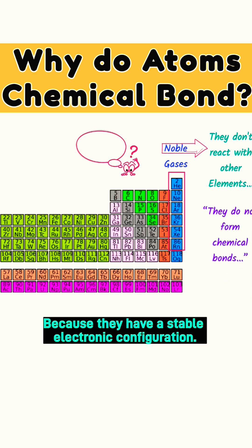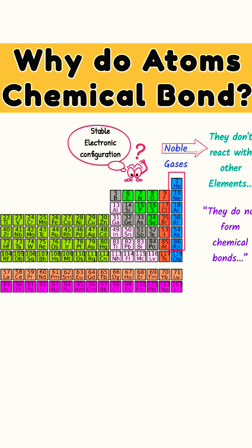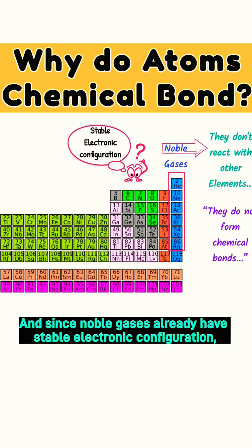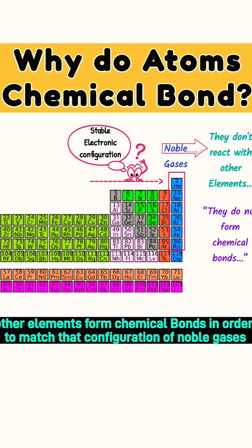Because they have a stable electronic configuration. And since noble gases already have a stable electronic configuration, other elements form chemical bonds in order to match that configuration of noble gases.